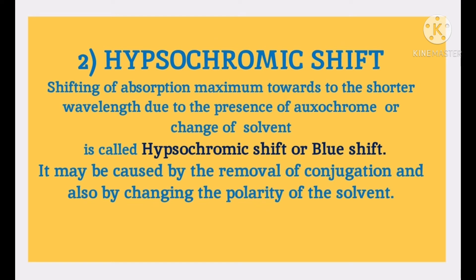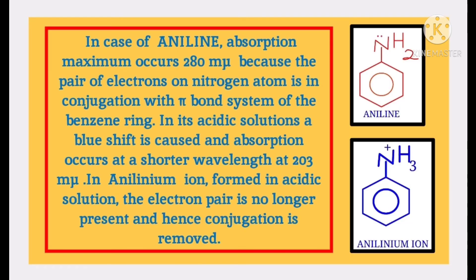Hypsochromic shift may be caused by the removal of conjugation and also by changing the polarity of the solvent. In the case of aniline, absorption maximum occurs at 280 millimicrons because the pair of electrons on the nitrogen atom is in conjugation with the π bond system of the benzene ring.